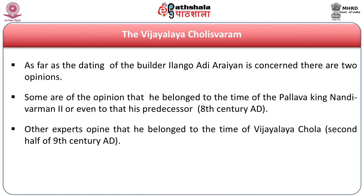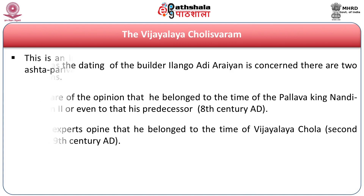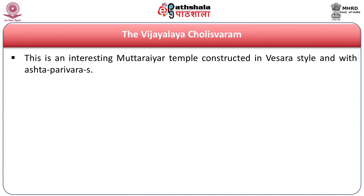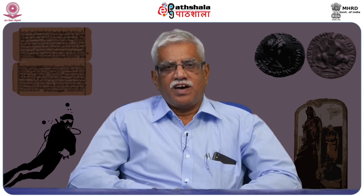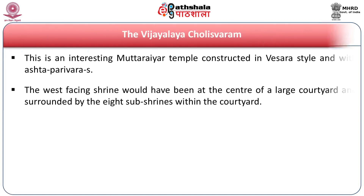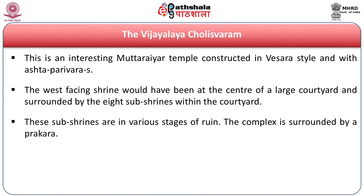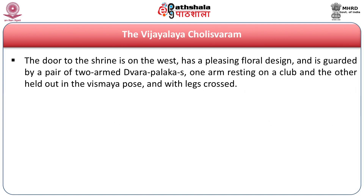This Vijayalaya Cholishvaram temple is considered one of the early Chola temples and is an interesting temple constructed in a circular style with Asta Parivaras — eight shrines around the temple within the Prahara wall. The west-facing shrine would have been at the center of a large courtyard surrounded by the eight sub-shrines. The courtyard is almost now fallen and damaged. The complex is surrounded by a Prahara. The door to the shrine has a pleasing floral design and is guarded by a pair of two-armed Dvarapalas under which the inscription is found.